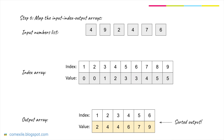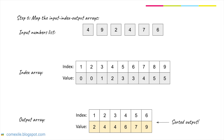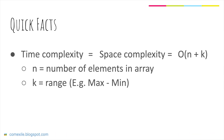Since we have iterated over all the elements in the input list, the output array should now hold the sorted output. Moving on to some quick facts about counting sort: the time complexity as well as the space complexity of this algorithm is O(n + k), where n is the number of elements and k is the range of elements.